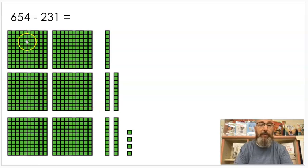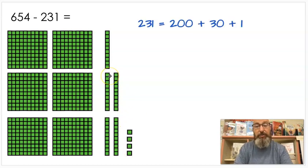So we have 654. So I did 600, 10, 20, 30, 40, 50, and 4. 654. Now usually what I like to do, and you don't have to do this, is I break up the subtrahend into expanded notation. So I break that 231 into 200 plus 30 plus 1. That tells me what I need to subtract.